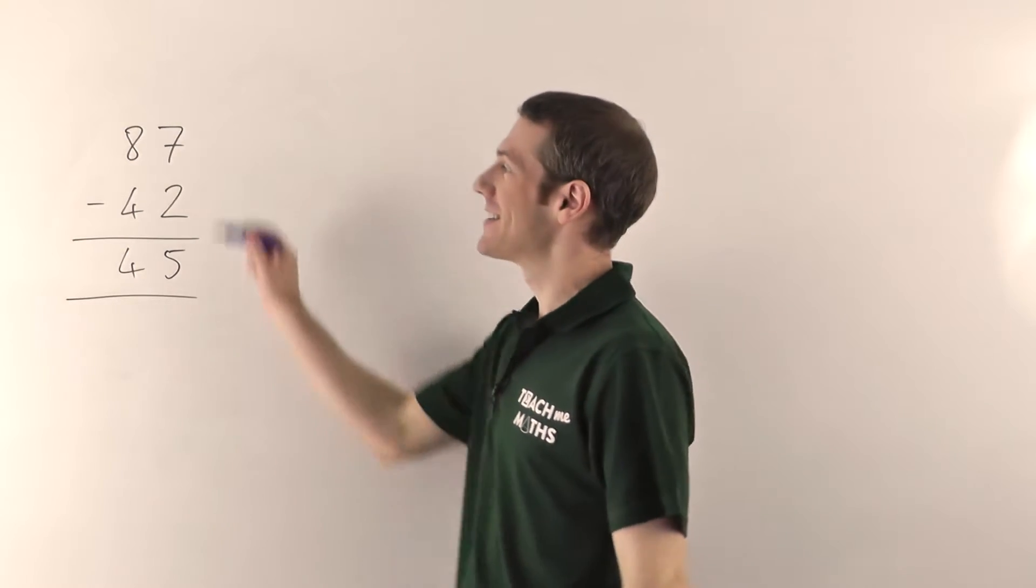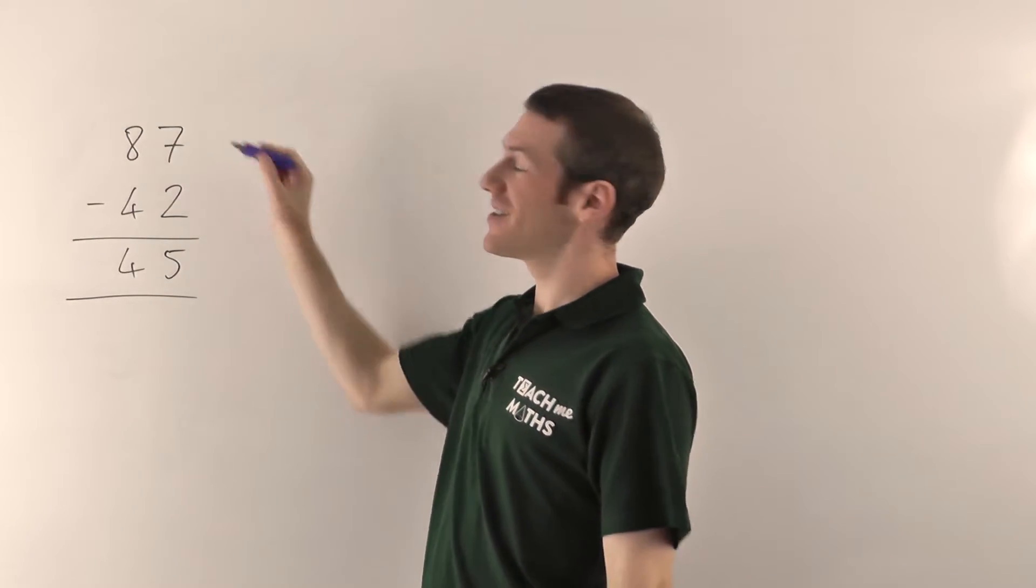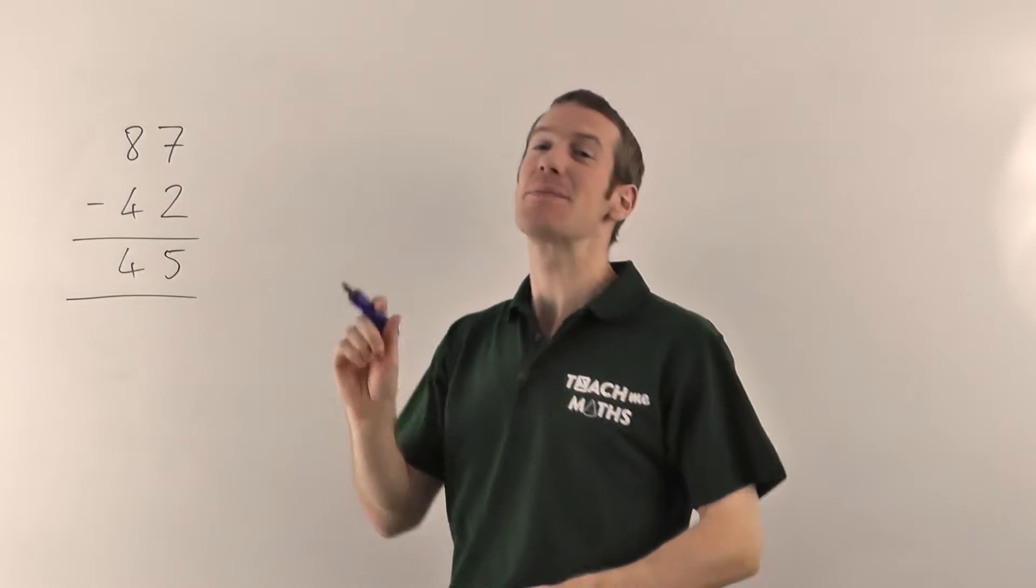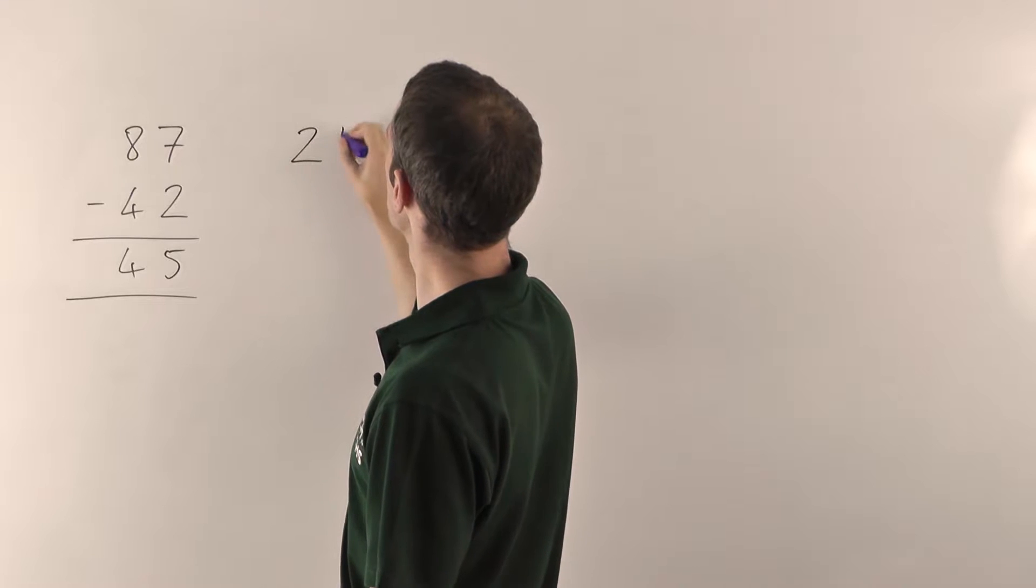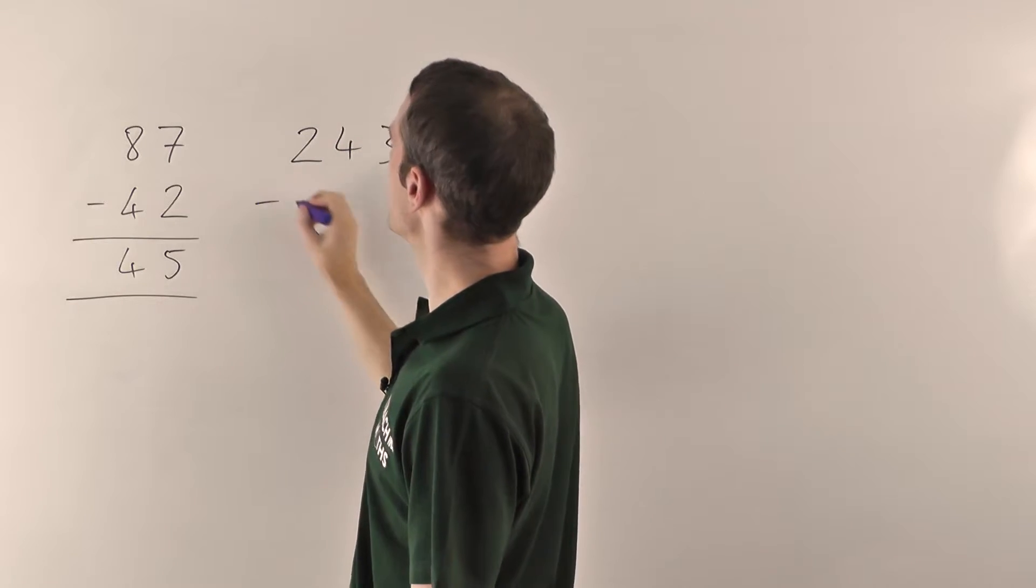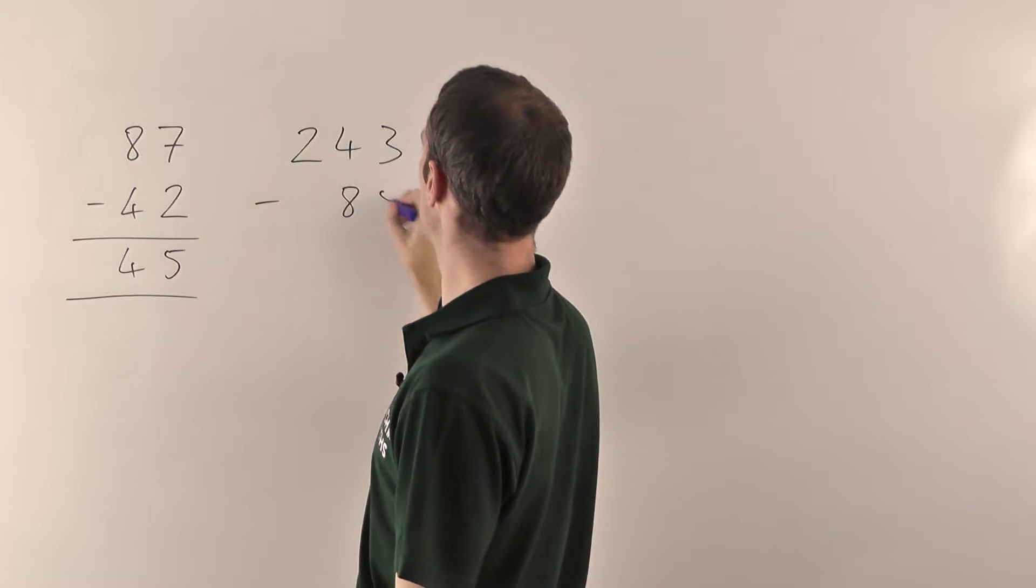Except that, as you probably realize, if the number on the bottom is bigger than the number on the top, then we have a little bit of an issue. Let me show you. We'll try 243 minus 85.